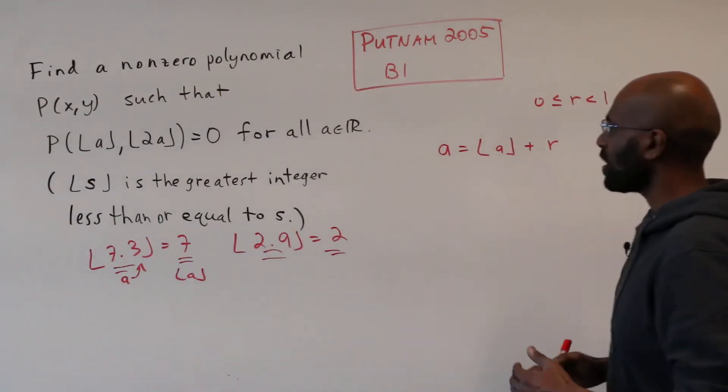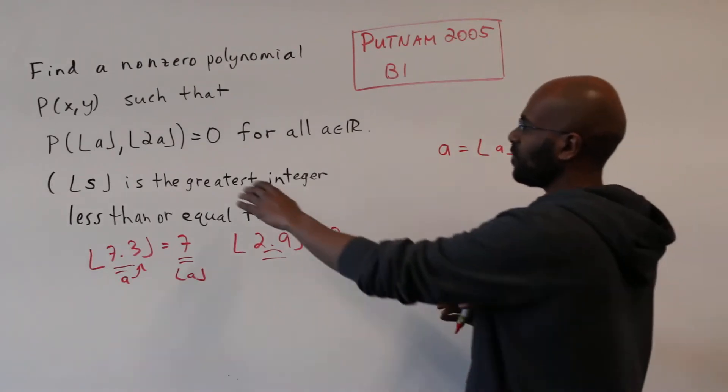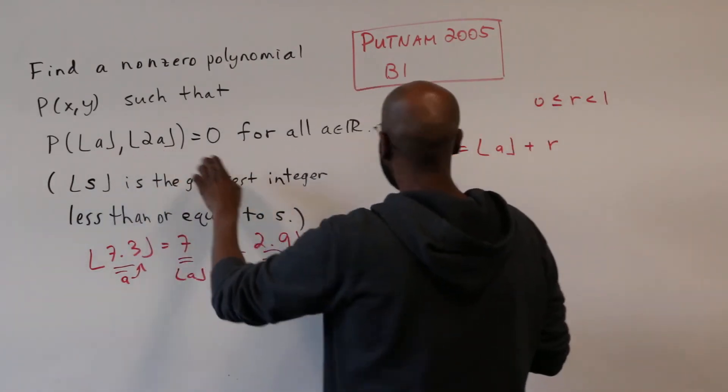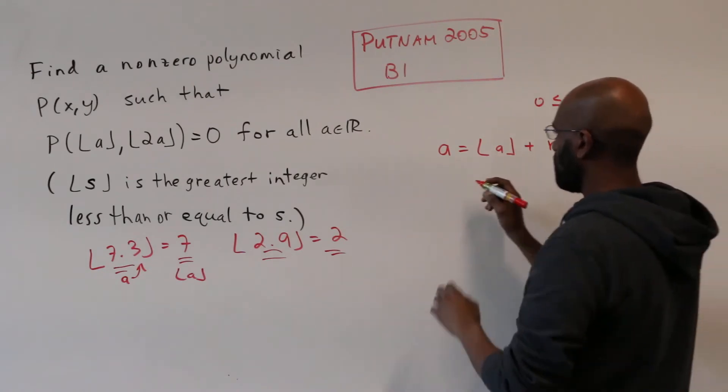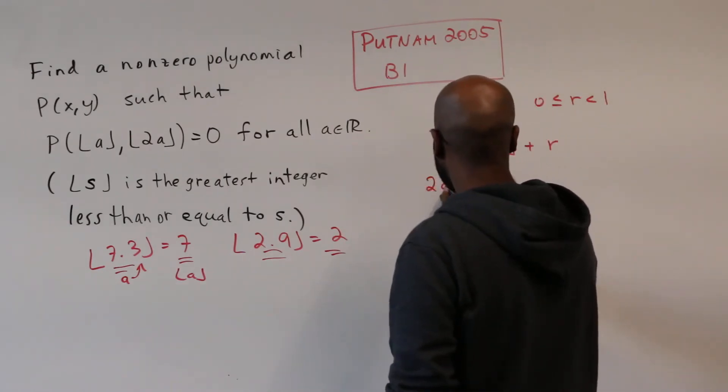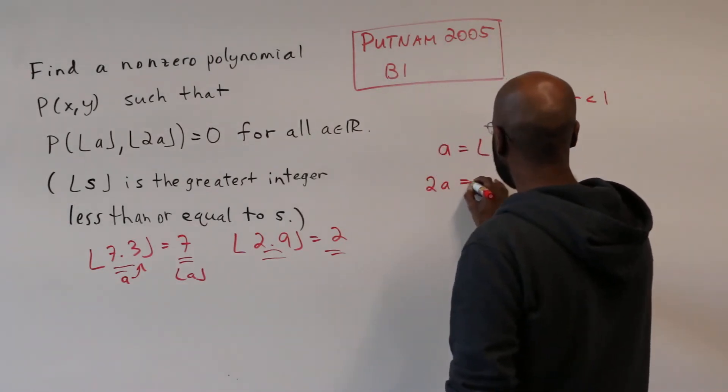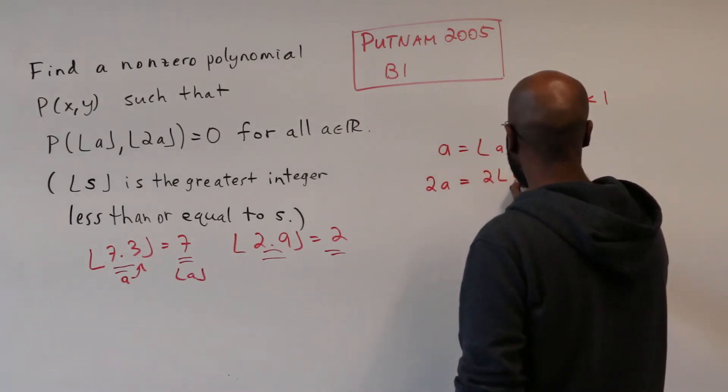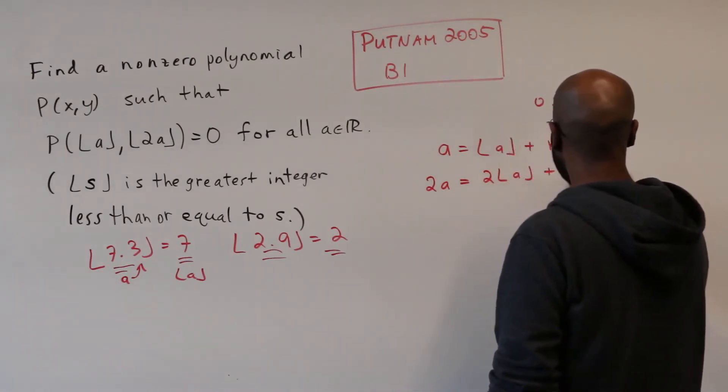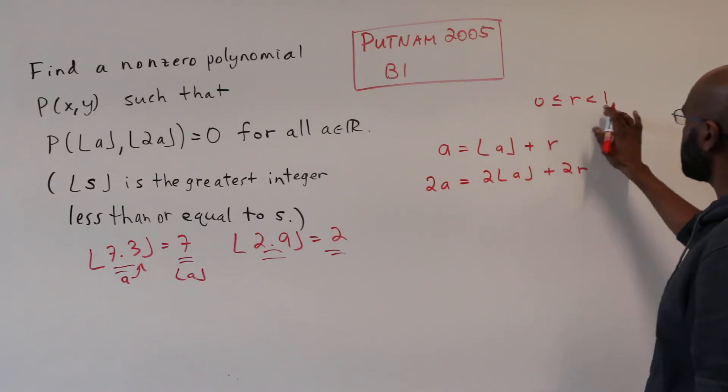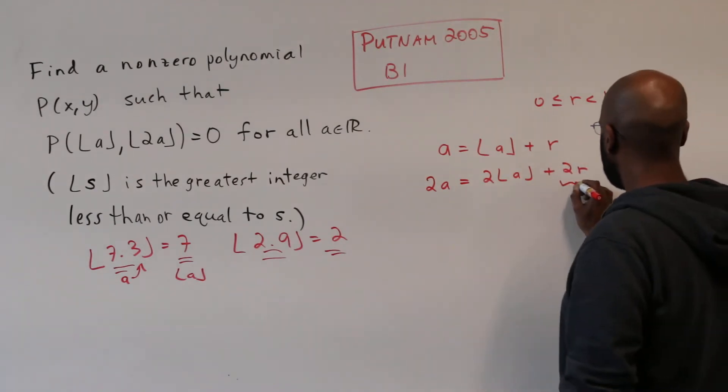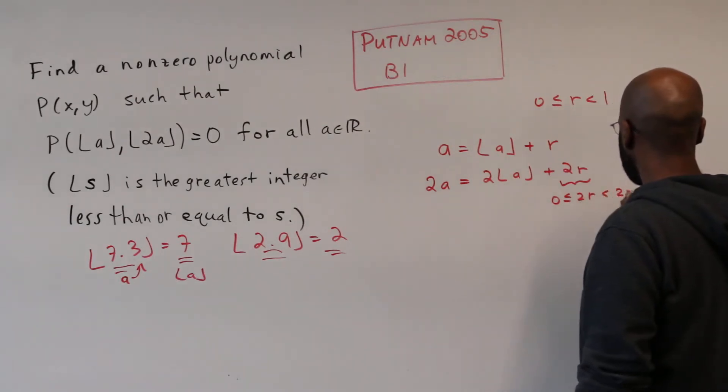Now we're trying to figure out a relationship between the floor of a and the floor of 2a. So it makes sense to multiply this quantity by 2. If we multiply a by 2, we get twice the floor of a plus 2r. And now because 0 is less than or equal to r is less than 1, this quantity is something that's at least 0 and strictly less than 2.